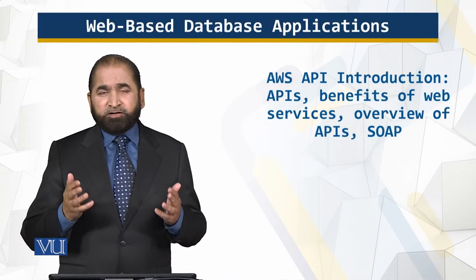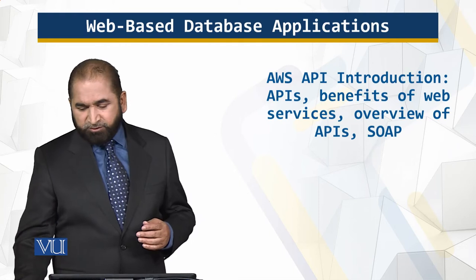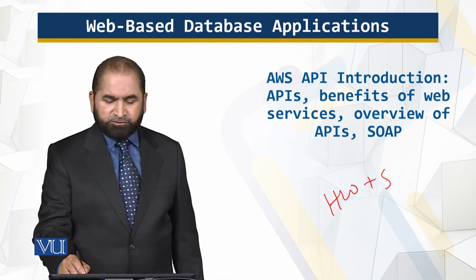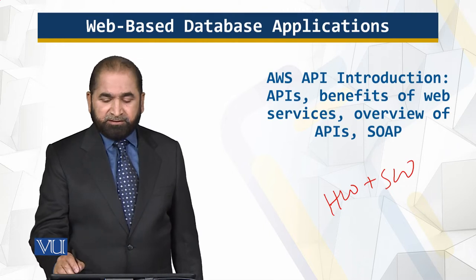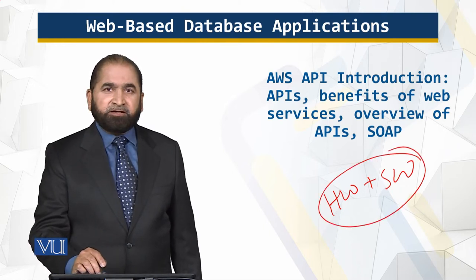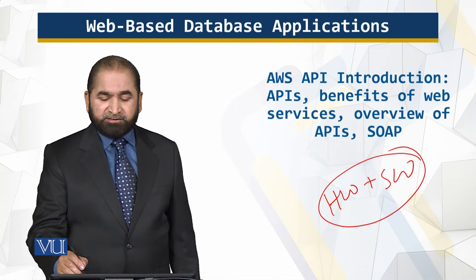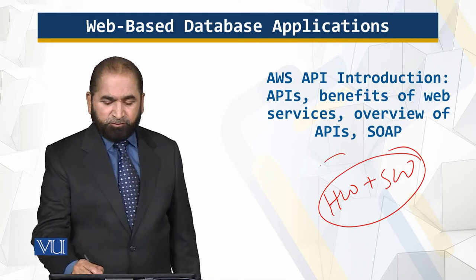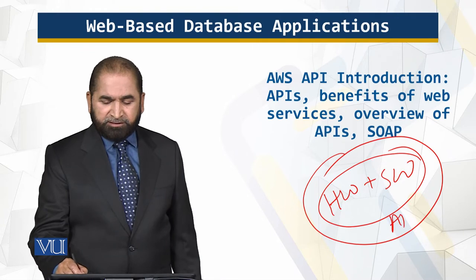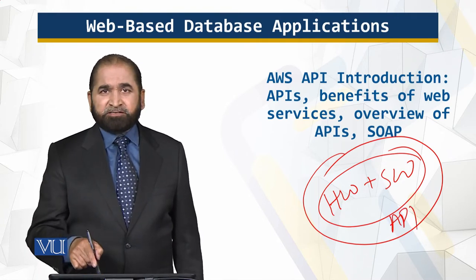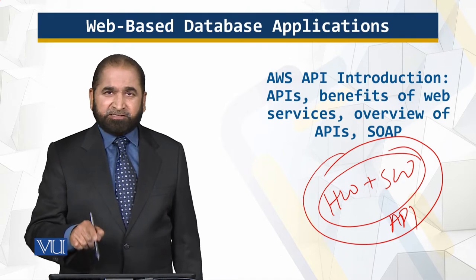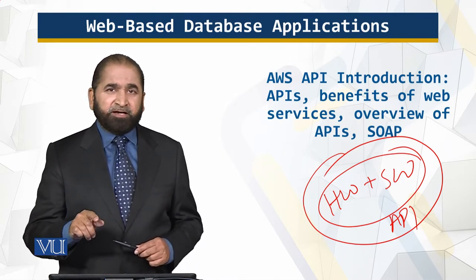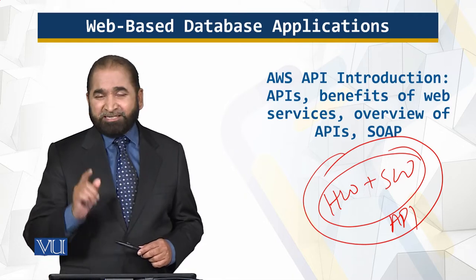In the context of Amazon Web Services, we have hardware and we have software, and this is combined together and it provides easy access functionality, and on top of it we have APIs sitting on them. We'll talk about APIs — Application Programming Interfaces — in this module, and we will briefly mention about SOAP and REST also.